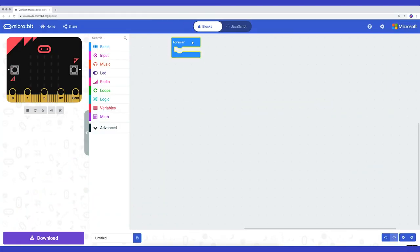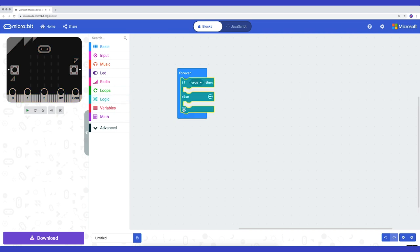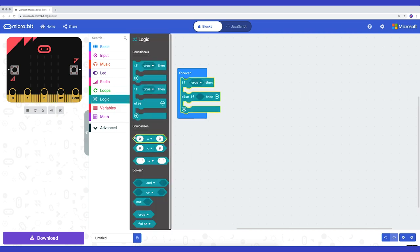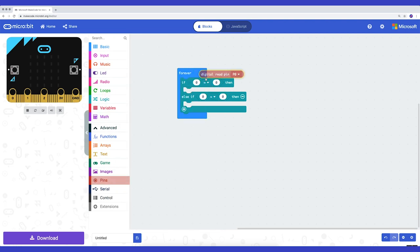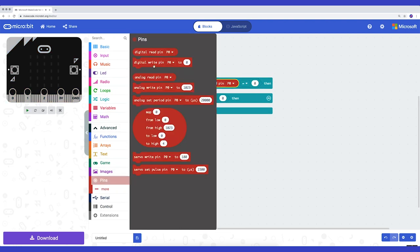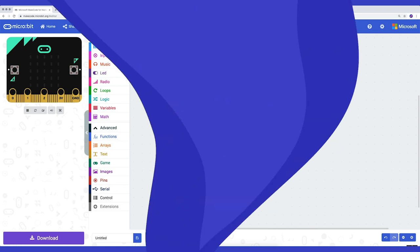In the block Forever, I place a block IF-THEN-ELSE. Then from Logic, zero equals zero twice. And in there, place READ DIGITAL PIN zero twice. Then I change the first zero into a one. If PIN zero receives a signal, then do this, otherwise do that. Your turn.